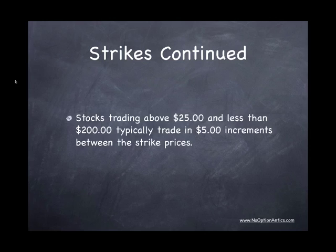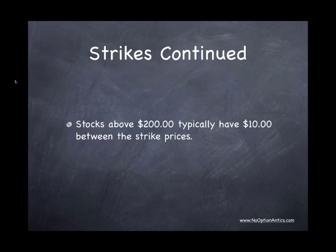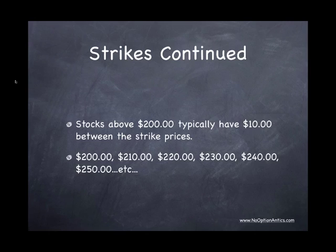Stocks that trade between $25 and $200 will generally have $5 in between the strike prices, so you'll see strike prices at $25, $30, $35, $40, $45, $50, and so on all the way up to $200. Stocks above $200 generally will have $10 increments in between the strike prices, so you'll see strike prices of $200, $210, $220, $230, and so on.